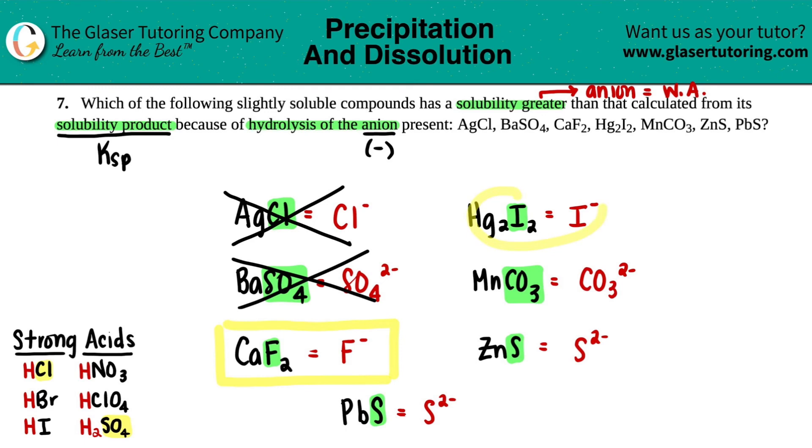Let's keep going. Hg2I2 has an I for its anion, and as I'm looking at my strong acids, I do see an I, so that's a strong acid anion, so that would not be making the solubility greater.